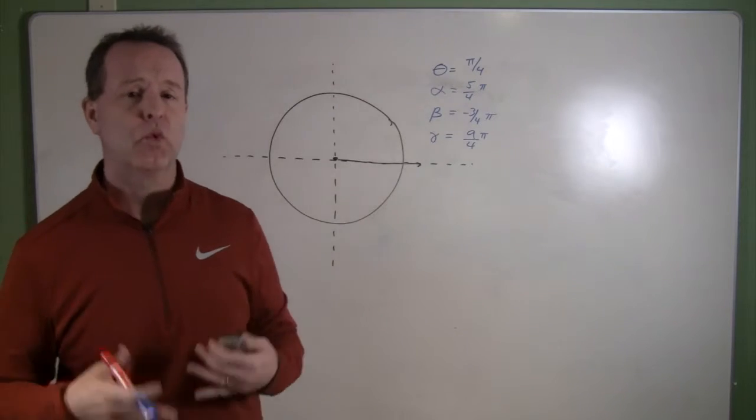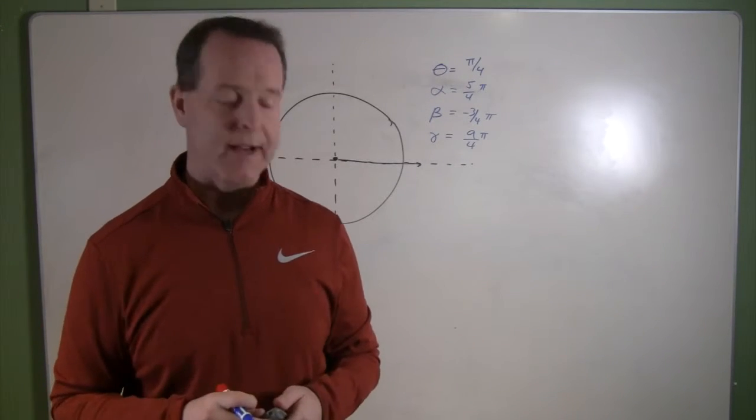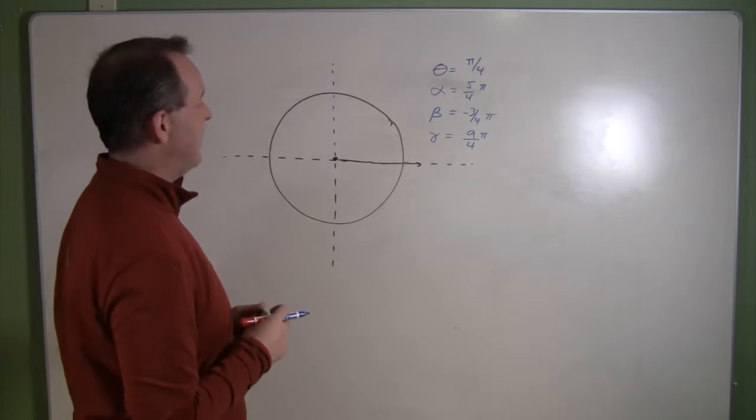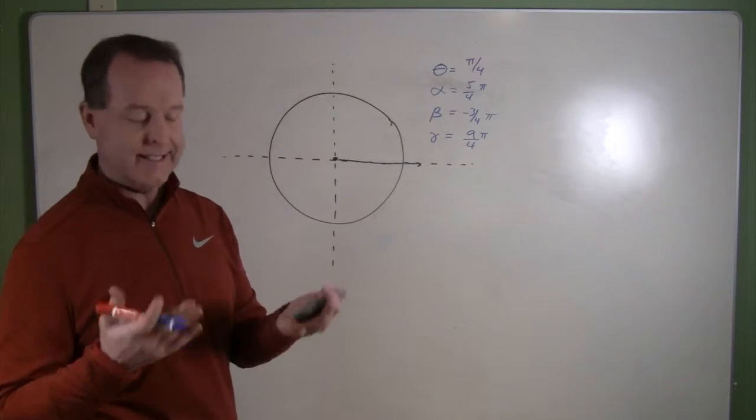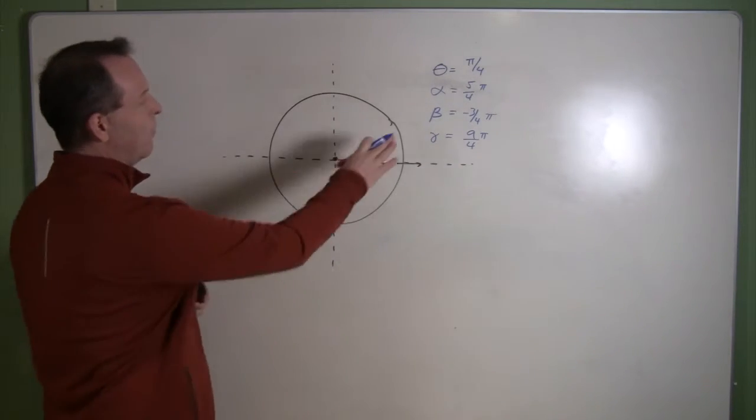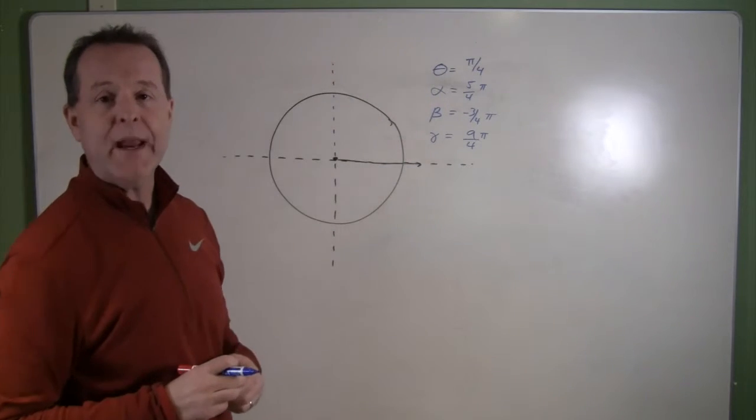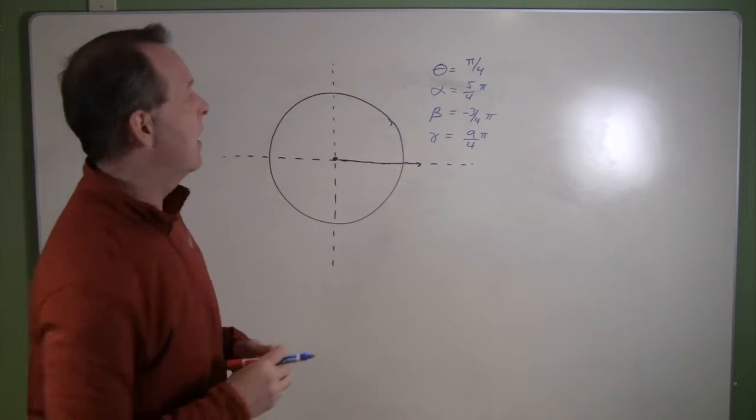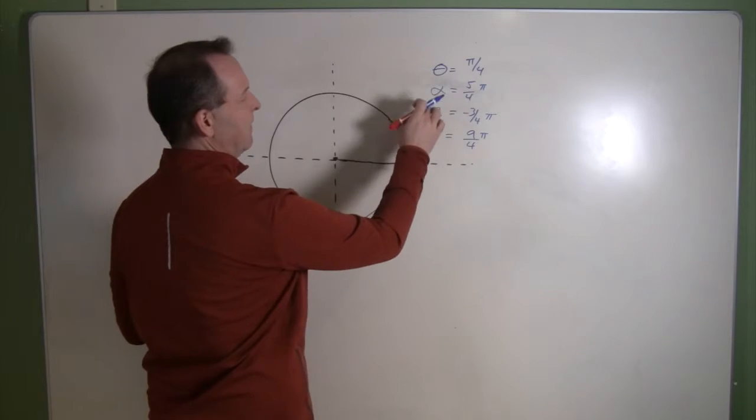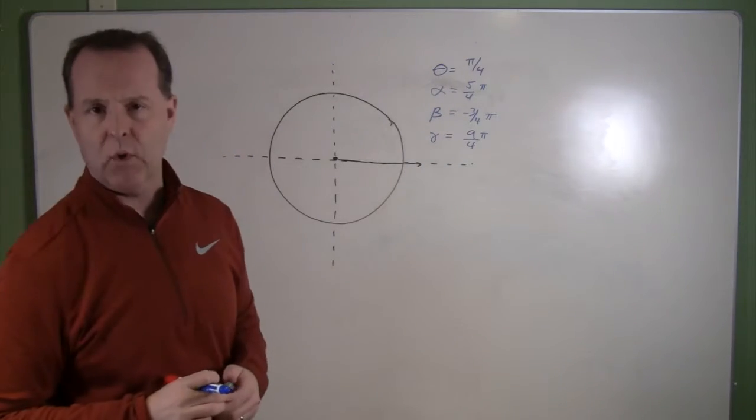There's going to be times that we're going to want to draw certain angle measurements when they're in standard position. So I have four examples over here of radian measurements that I would like to draw and I designated with different versions of angles that we'll often see.